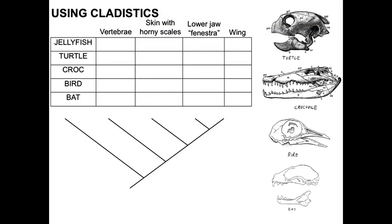Now we're going to look at a couple of different groups, looking at four different characters. So we'll start with vertebrae. When we are coding character states, vertebrae would be our character, and the character states are coded using zeros and ones. We give zero for the ancestral state. Because we know jellyfish are the outgroup, we use their character state to assign the ancestral state — the ancestral condition for vertebrae would be lacking vertebrae, so they get a zero, whereas everything else gets a one.